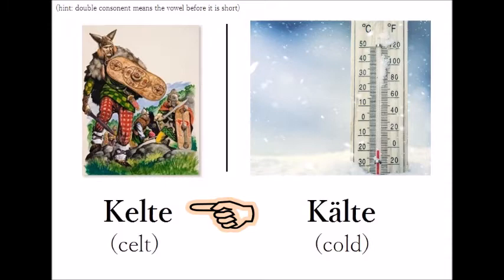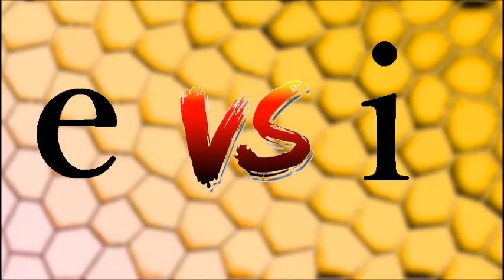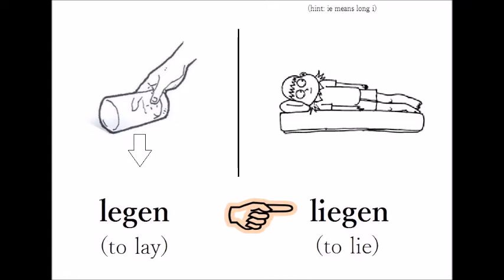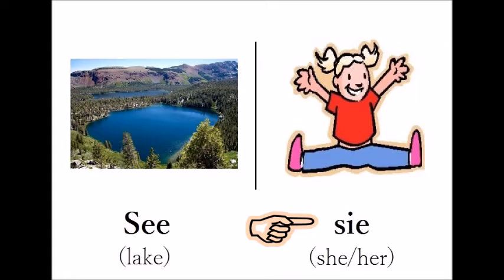E versus I. Legen — Liegen. Legen — Liegen. See — Sie. See — Sie.